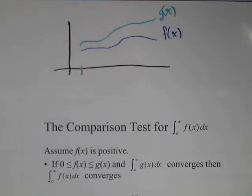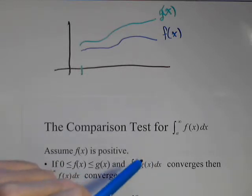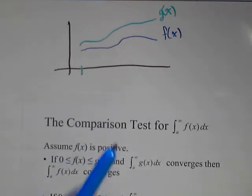One thing to remember is you can only use the convergent improper integral to show convergence. And you have to show that the one you're testing is less than it.